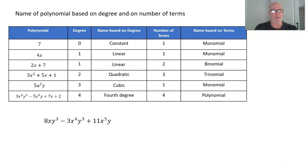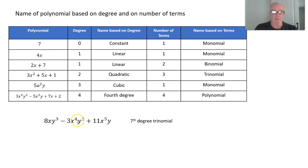Here's something for you to try. Pause the presentation and figure out the name of this polynomial by both degree and number of terms. This is a seventh degree trinomial. The first term has 1 + 3 = 4. The second term has 4 + 3 = 7. The last term has 5 + 1 = 6. The highest degree is 7, and there are three terms, so that's a seventh degree trinomial.